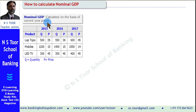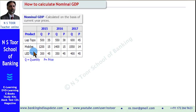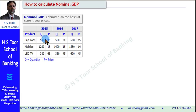Let us see this question. Here we are given some information relating to the years 2015, 2016, and 2017. We are assuming that in this economy only three items are produced — to make the learning simple. These products are laptops, mobiles, and LED TVs. We are given quantity as well as price for all three years.